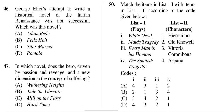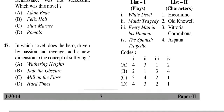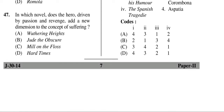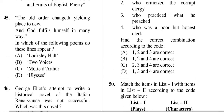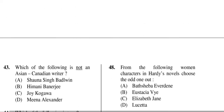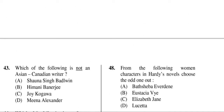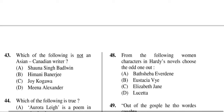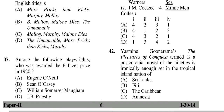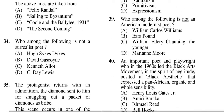Question forty-six: George Eliot's attempt to write a historical novel of the Italian Renaissance was not successful — which novel was this? The answer is D — Romola. Question forty-seven: in which novel does the hero, driven by passion and revenge, add a new dimension to the concept of suffering? Correct answer is A — Wuthering Heights. Question forty-eight: from the woman characters in Hardy's novel, choose the odd one out — the answer is C, Elizabeth-Jane.